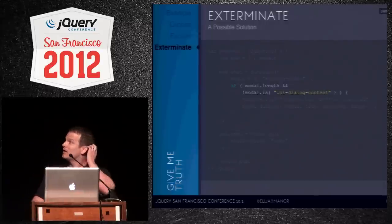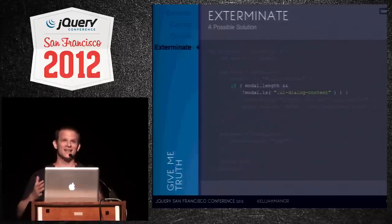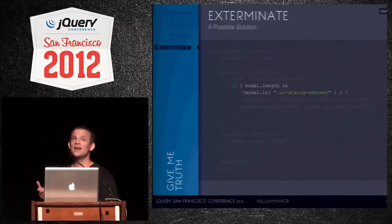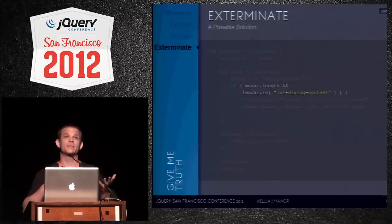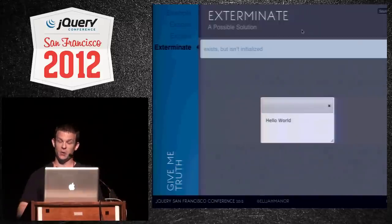The easiest fix: use .length on the jQuery object, which tells you how many elements it found — that gives a truthy/falsy number. Then use the .is() method instead of .not() — you pass a selector and it returns true or false based on whether elements in the collection match. With those small changes, we re-run the code: calling init, open, init again as many times as we want, and it never re-initializes.